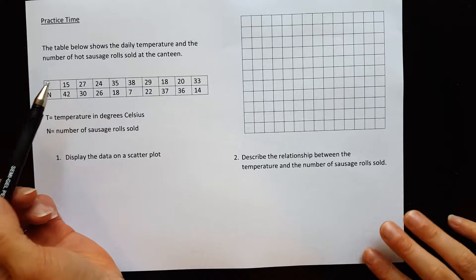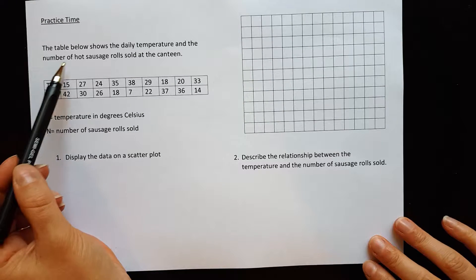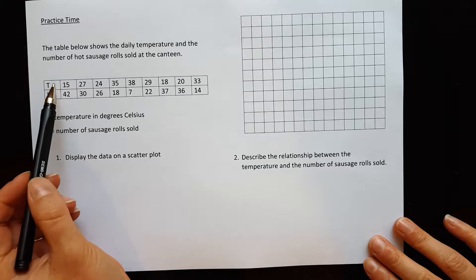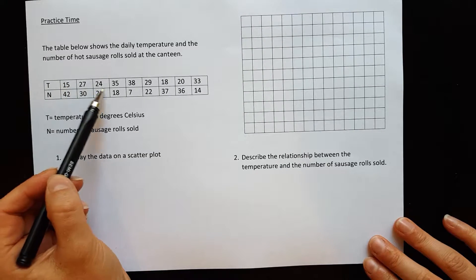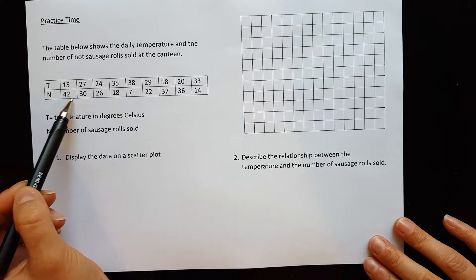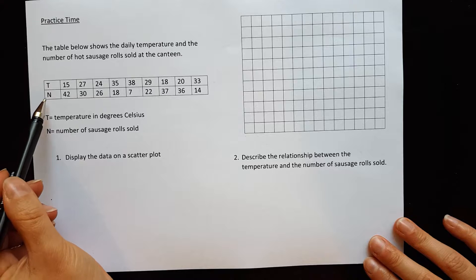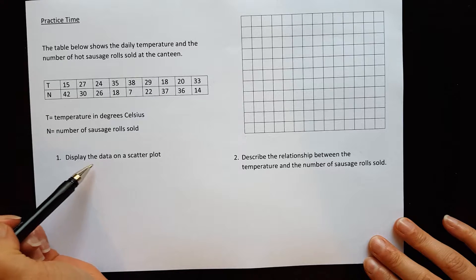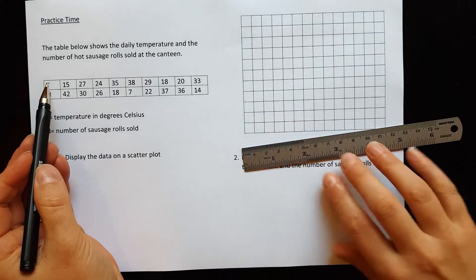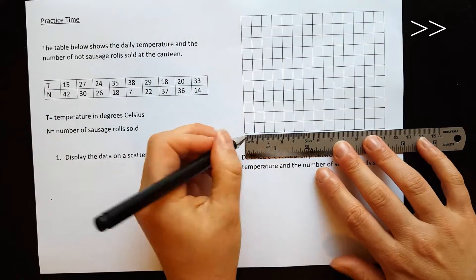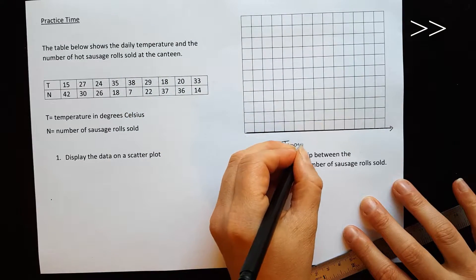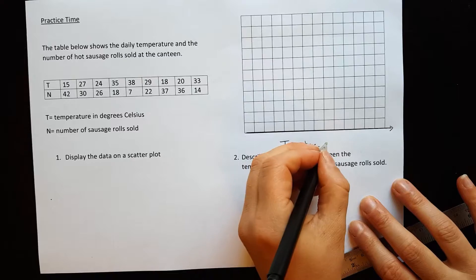So the table below shows the daily temperature and the number of hot sausage rolls sold at the canteen. So the temperature, we have some varying temperatures here. T is for temperature. And N, the number of sausage rolls sold at the canteen. So display the data on a scatter plot. The temperature is going to go across the bottom. That is in degrees Celsius.